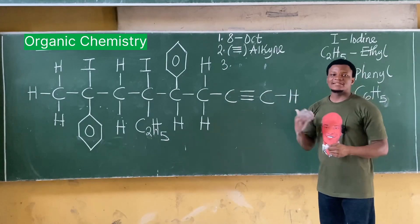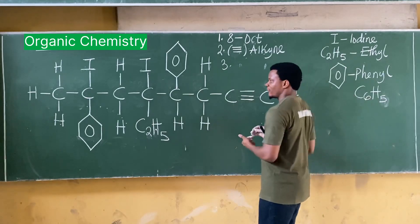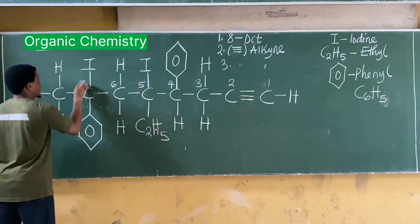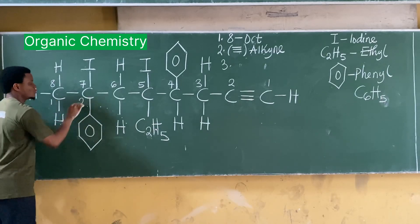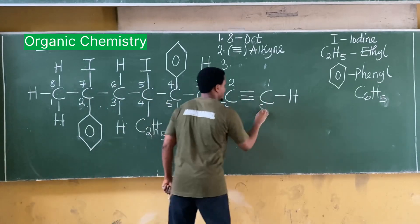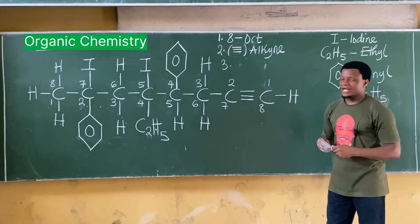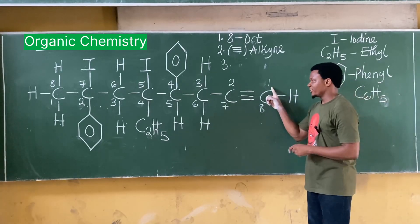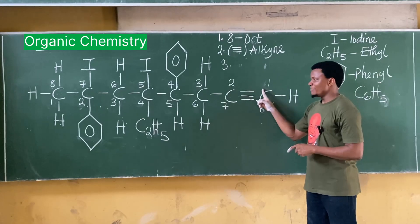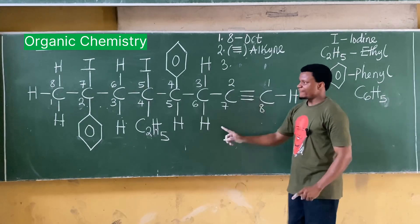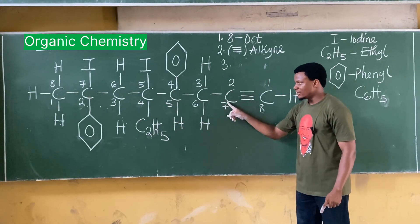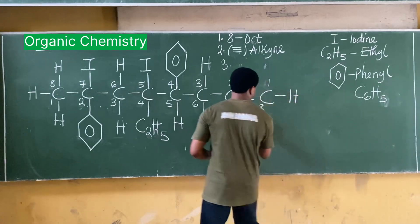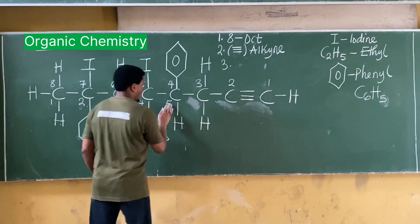For the numbering system, I'll do upper numbering (right to left): one, two, three, four, five, six, seven, eight — and lower numbering (left to right): one through eight. I pick the direction that gives the lowest possible position to the triple bond. Upper numbering places the triple bond at carbon one; lower numbering places it at carbon seven. Since one is lower, I go with upper numbering.